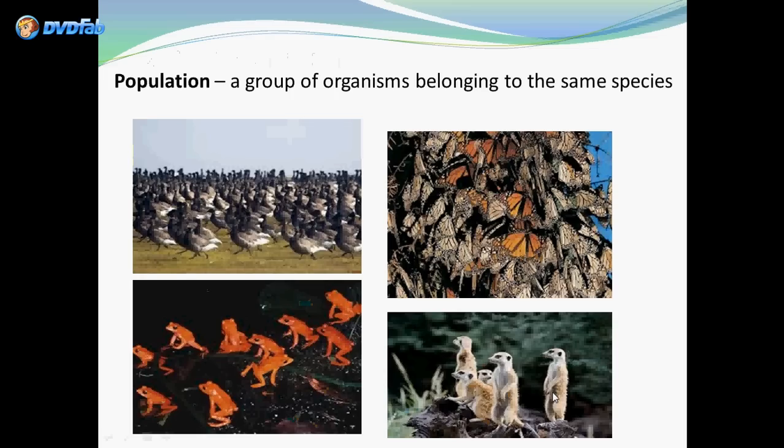Starting with populations — a population is a group of organisms belonging to the same species. Here are a few examples: monarchs, meerkats, frogs, etc.